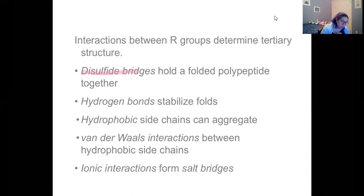You can have disulfide bridges like we talked about earlier with the sulfur groups. You can have hydrogen bonds, you can have the hydrophobic interactions kind of coming together to avoid the aqueous environment they're in. You can also have van der Waals interactions between those hydrophobic side chains. And you can even have ionic interactions forming what are called salt bridges. So all of these different interactions are attracting or pushing away from each other to form what is known as your tertiary structure, your tertiary folding.